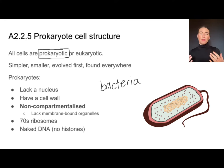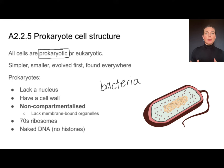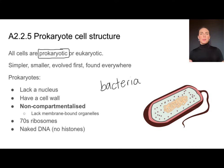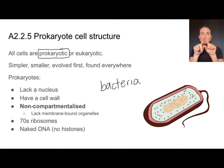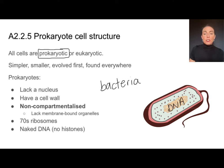Prokaryotes in general are much simpler in their structure. They are smaller — generally less than 10 micrometers — and they evolved first; they were the first types of cells to evolve. They're also ubiquitous, meaning they are found in every different biome and habitat on Earth. Prokaryotes lack a nucleus, so their DNA is not surrounded by a membrane. They do have DNA — it's just not surrounded by a nuclear membrane.